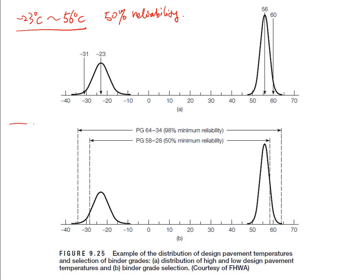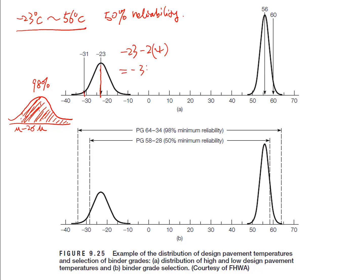For the normal distribution curve, if we move two standard deviations below the mean — that is, mu minus 2 times sigma — the area under the curve to the left represents 98 percent probability. So if we want a binder that satisfies 98 percent reliability, we move the minimum temperature two standard deviations below the mean: negative 23 minus 2 times 4 equals negative 31 degrees Celsius.